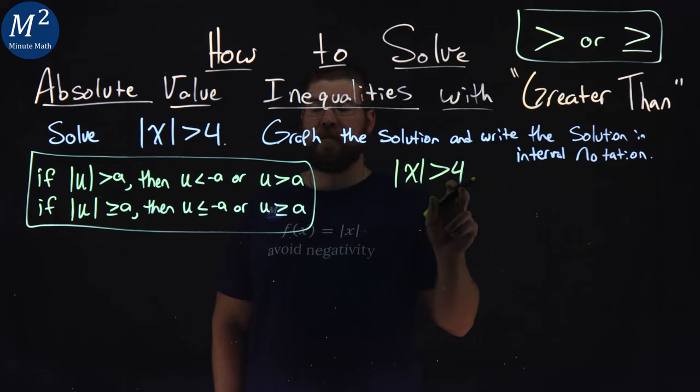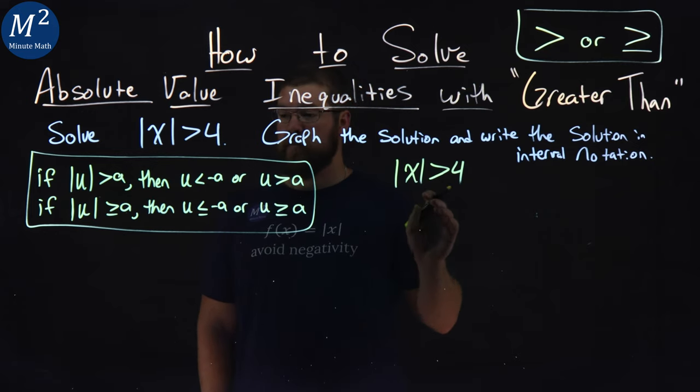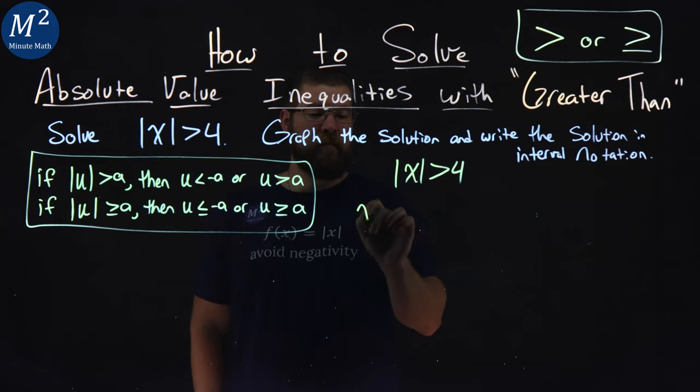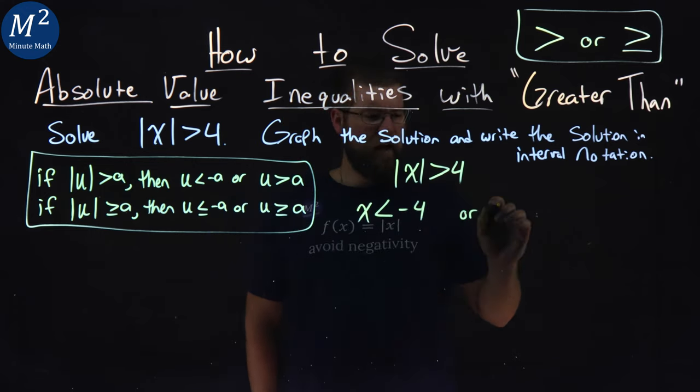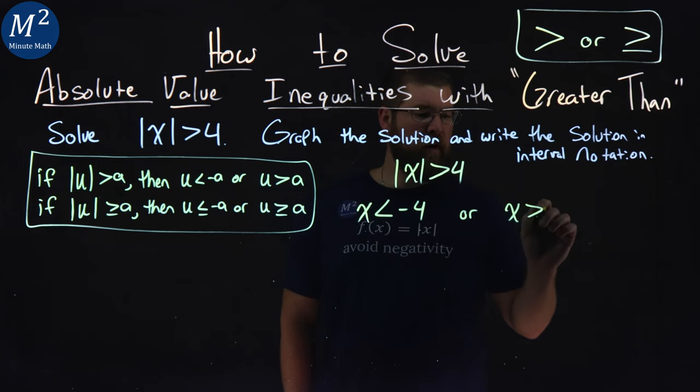If the absolute value of x is greater than 4, then our u value, which is x here, is less than negative 4, or x is greater than positive 4.